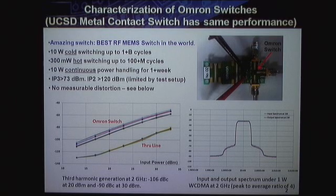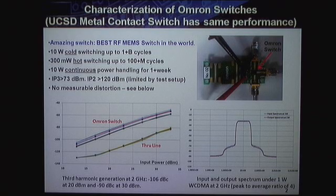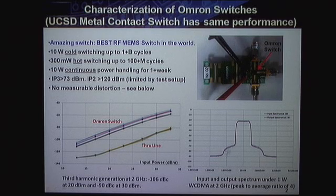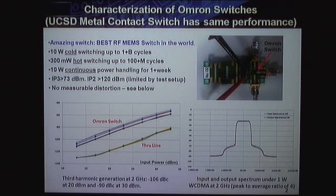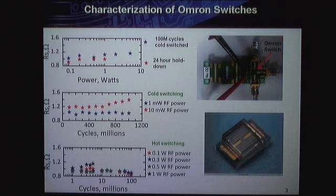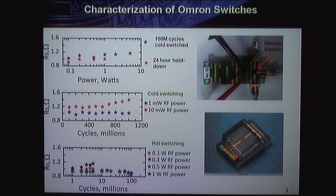We tested it for a week but it can go for months, with cold switching up to billions of cycles. At 1 watt wideband CDMA with a peak-to-average ratio of 4, the input and output spectra through the switch are indistinguishable — the distortion is only from the PA, not the switch. At 1 watt it generates minus 90 dBm of harmonics, which meets all standards. The switch maintains 0.8 to 1 ohm resistance under a variety of test conditions all the way up to 10 watts.